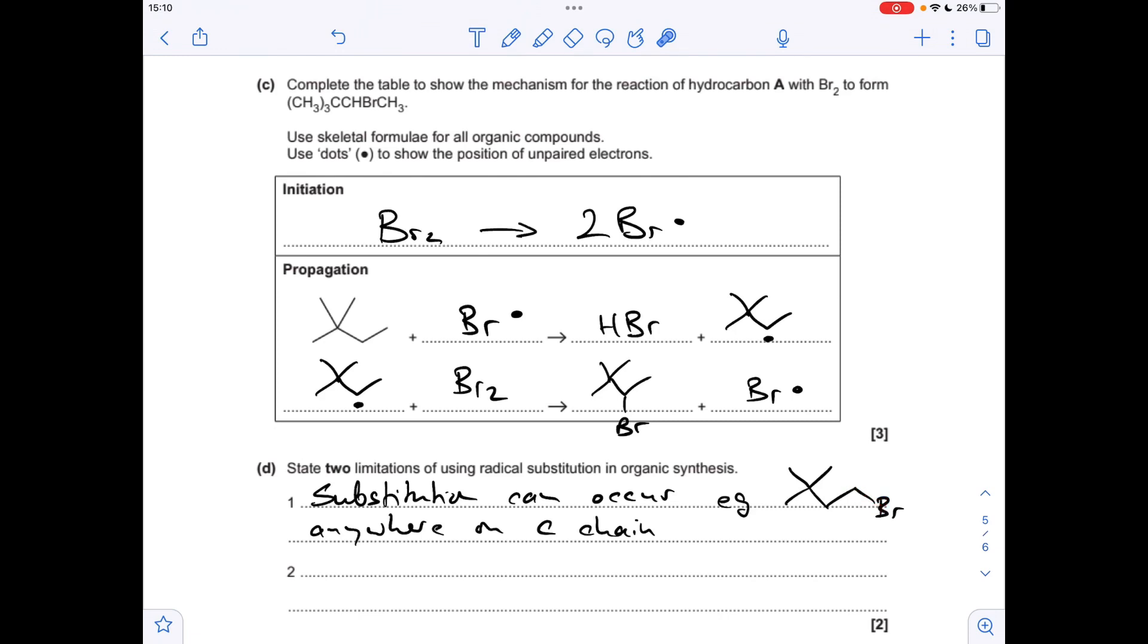Another thing that could happen is if the bromine was in excess, you could get multiple substitutions occur - you could get a dibromo or a tribromo alkane formed instead. Again, it wasn't required for this question, but there's an example of a dibromo end product that could form. So there's two limitations, we've answered the question.